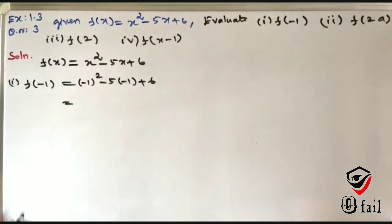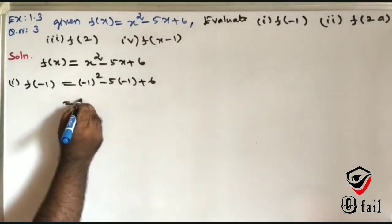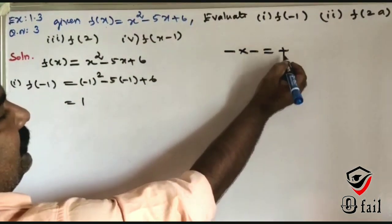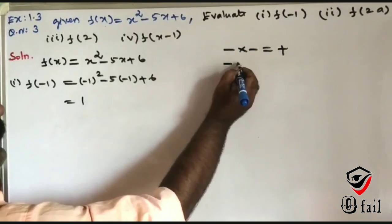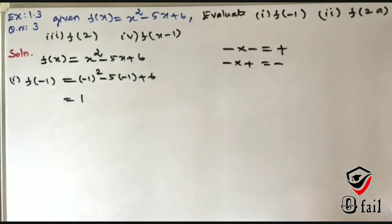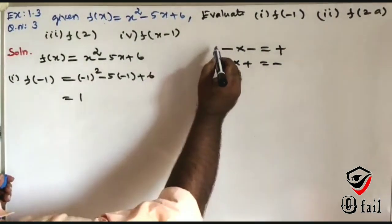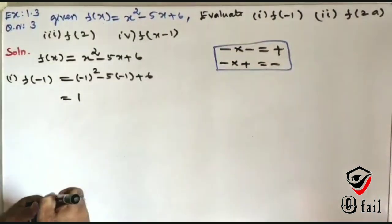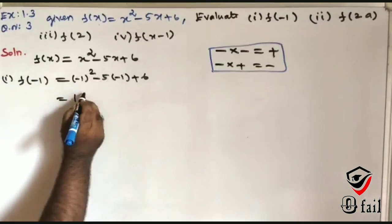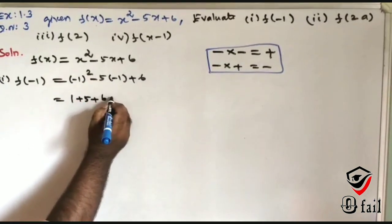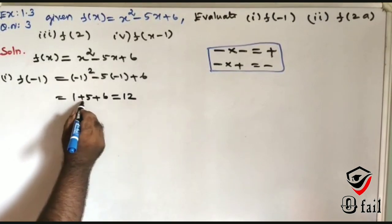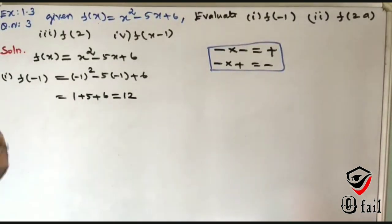Now, minus 1 squared equals plus 1. Remember the sign rules: minus into minus equals plus, and minus into plus or plus into minus equals minus. This is a key concept. So minus into minus gives plus 5, plus 6, which equals 6 plus 6, that is 12.